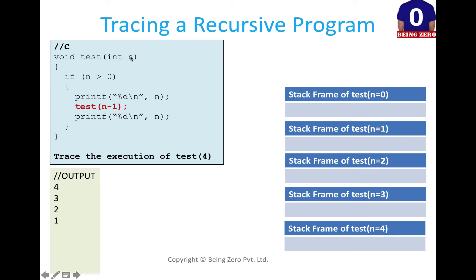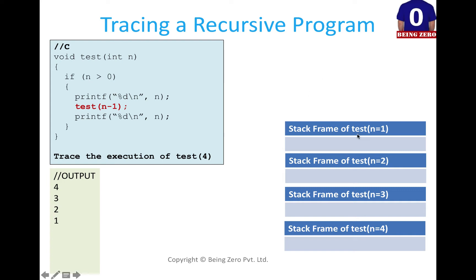When the call with n=0 is made, 0 greater than 0 is not true, so the if condition evaluates to false. There's no other statement — this is a void function — so it reaches the last curly bracket and returns. Test with n=0 returns to the previous call, which was made by the function where n was 1.